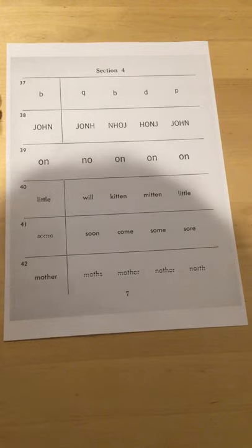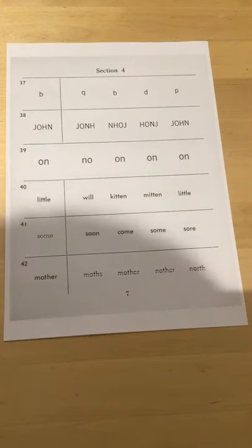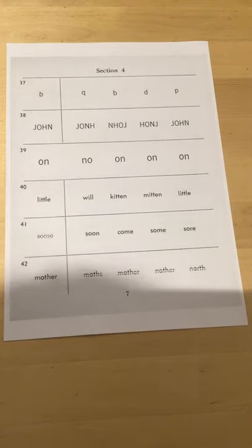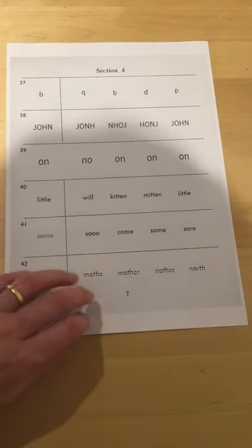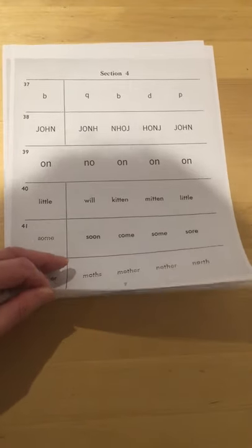And again we're on section four. We move into more print-based questions so we're looking at discrimination of size, position, sequence and relationship of letter and word symbols and groups of symbols as well. And the last page.